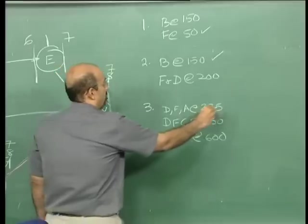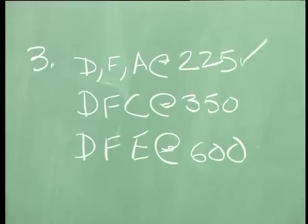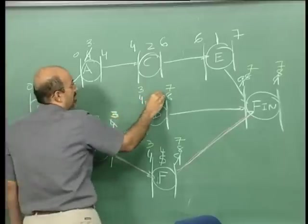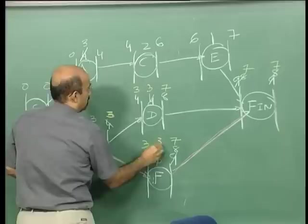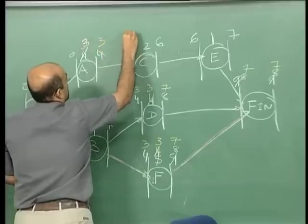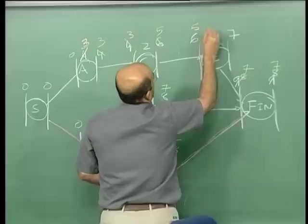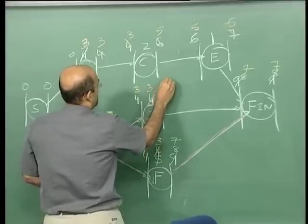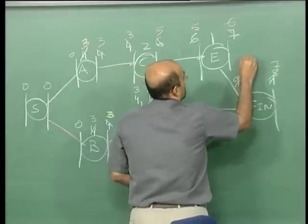My choice would be D, F, A. I am going to crash that combination — E goes to 3. So this goes to 0, and then D goes to 3. This path becomes 3, then 3 to 5 and 5 to 6. The duration changes from 3 to 6.